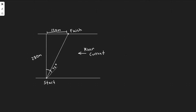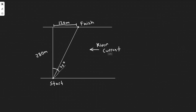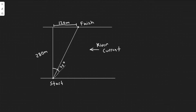Let's understand what we have going on here. The boat starts here, initially travels at a 45-degree angle, travels 280 meters this way and 120 meters this way, and finishes right here. We're trying to find the speed of the river current.